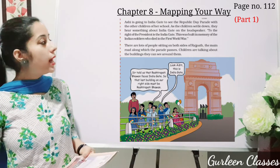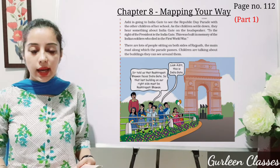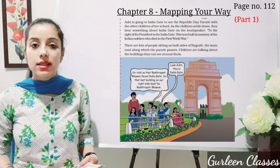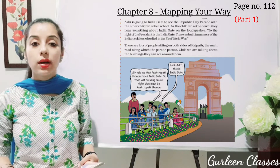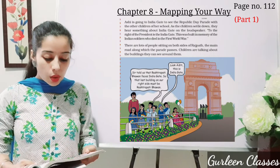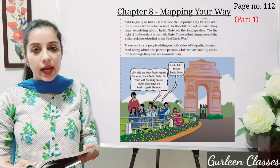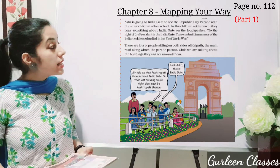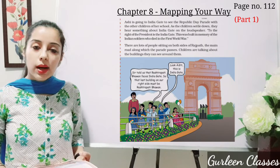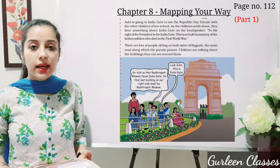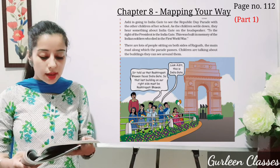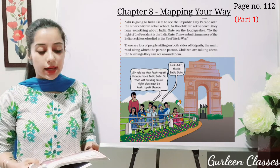Here in the picture you can see India Gate. The children are settled down and they hear about India Gate on the loudspeaker. A boy says: 'Look Aditi, this is India Gate. Sir told us that Rashtrapati Bhavan faces India Gate. So that last building on your right side must be Rashtrapati Bhavan.'